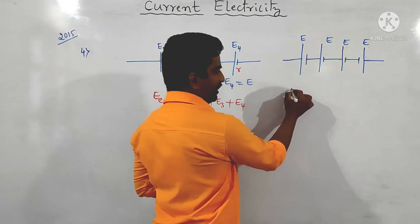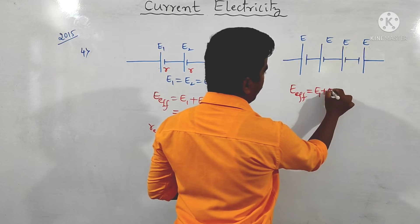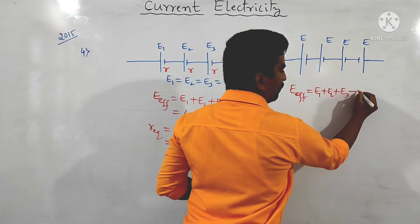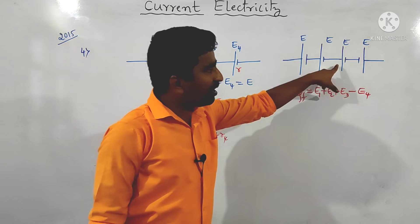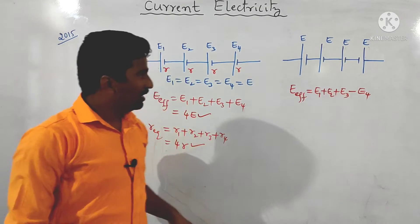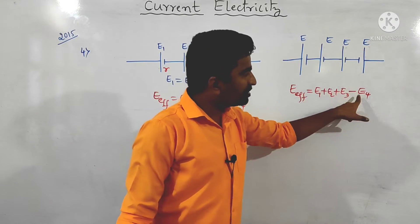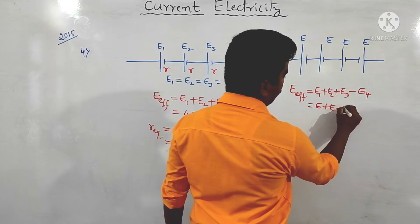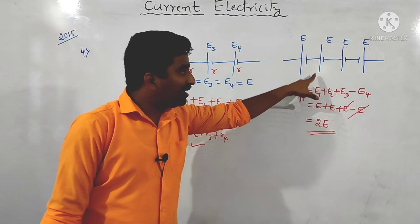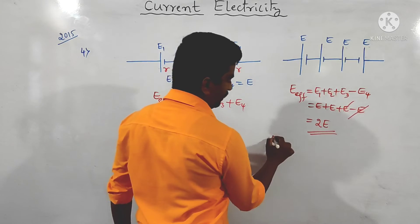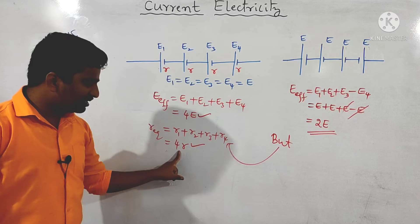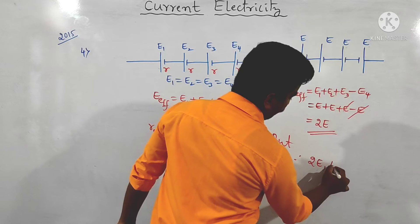When one cell is wrongly connected, it has opposite polarity, so its EMF is subtracted. The effective EMF becomes e + e + e − e = 2e. The internal resistance always adds up regardless of polarity, so it remains 4r. Therefore the answer is: effective EMF = 2e, effective internal resistance = 4r.